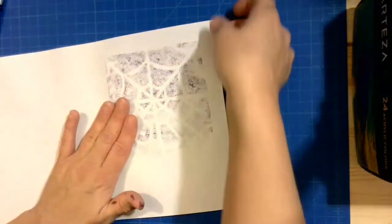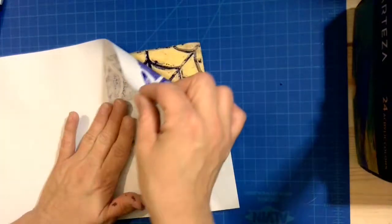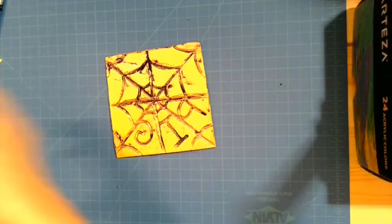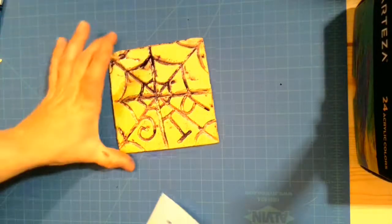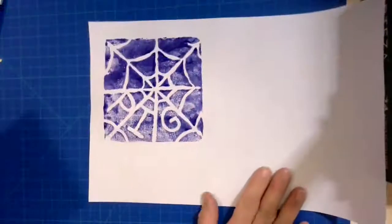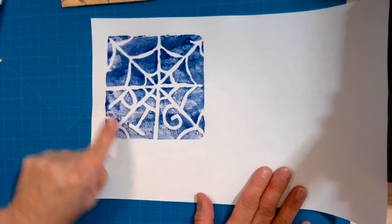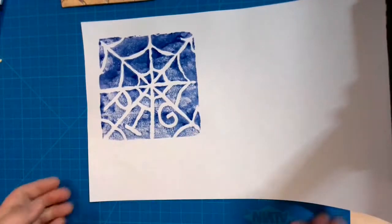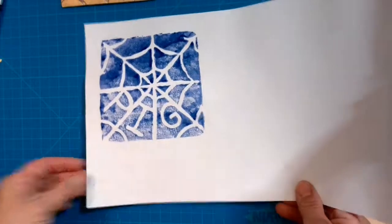Then very gently I'm going to start lifting it slowly from the corner and pull it off my template and with a little luck the paint will have transferred from the template onto your paper and it looks like you can even see the word pig on my spider web.